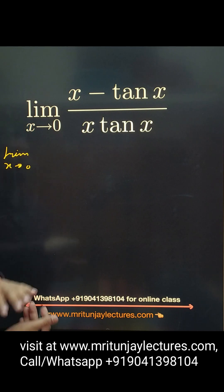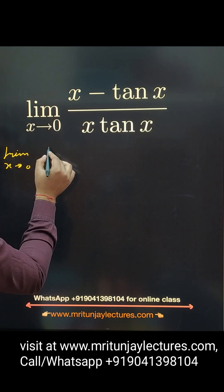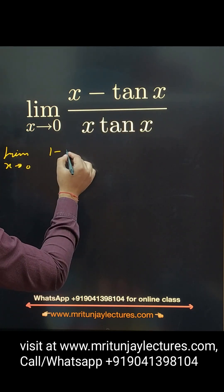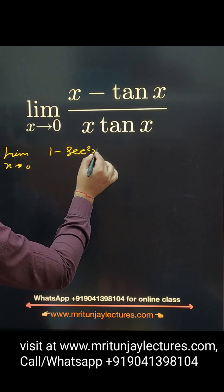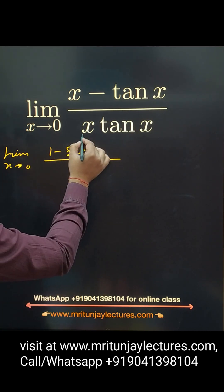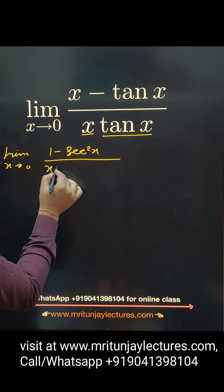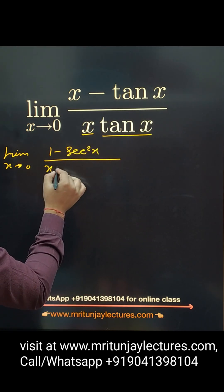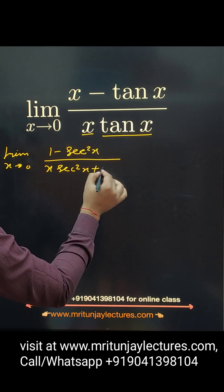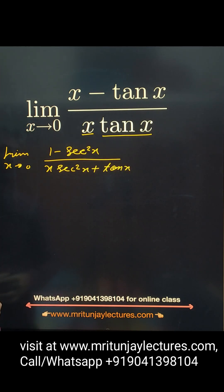Applying L'Hôpital's rule: differentiating the numerator with respect to x gives 1 minus sec²x. For the denominator, using the product rule — first function x, second function tan(x) — we get x·sec²x plus tan(x)·1, which is x·sec²x plus tan(x).